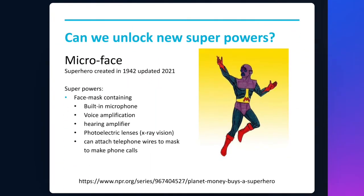Can we unlock new superpowers and build new characters? Here's an example of a superhero called Microface, created in 1942. He's a human sound amplifier with a built-in microphone in his mask and a voice amplifier — isn't that a kind of super audiologist? A fun fact is that he could attach telephone wires to his mask to make phone calls, which was state of the art in 1942. But Microface was updated this year, and the lesson is that characters develop even from a strong position. Our field is innovative and keeps inventing, which means we as players need to evolve too.